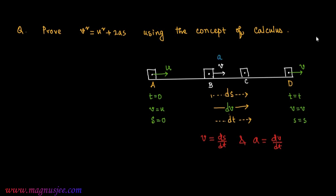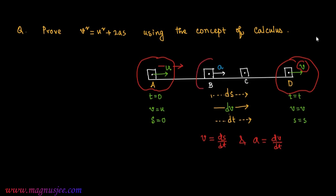At point B, the instantaneous acceleration of the body is A. At point A, the body was moving with initial velocity u, and after time t seconds the body reaches point B, where the final velocity becomes v. At the intermediate point B, the body has instantaneous acceleration A.